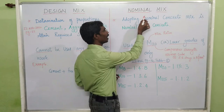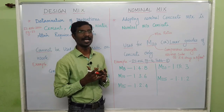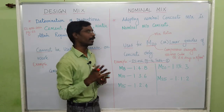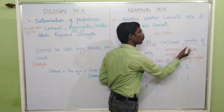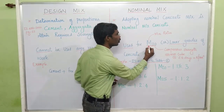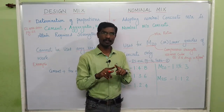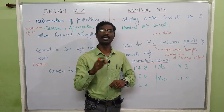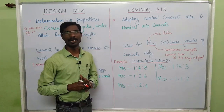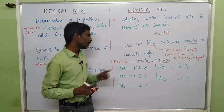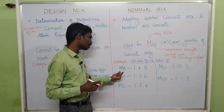Now we will discuss the nominal mix. Nominal mix means adopting the nominal mix ratio for concrete works, and this is called nominal mix concrete. This nominal mix concrete can be used only up to M20 concrete or lower grade only. The M denotes the mixing ratio, and the number denotes the compressive strength of the concrete for a cube size of 150mm. After 28 days of curing, you will get strength of 20 Newton per mm². As per IS 456-2000, page number 16, table 2, they list M8.